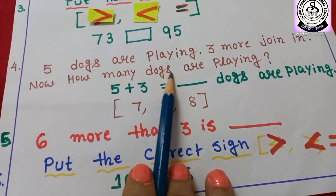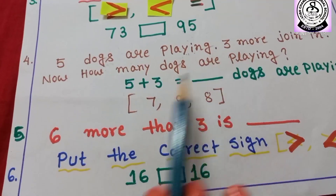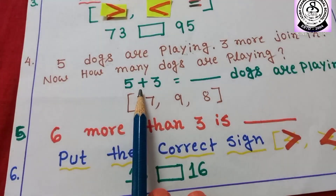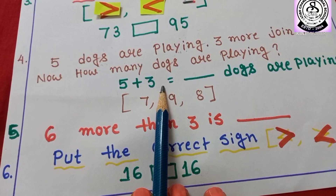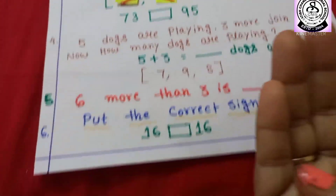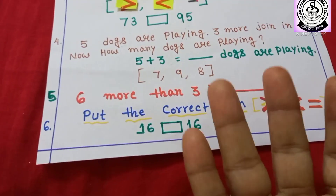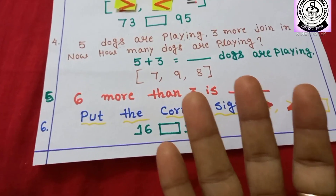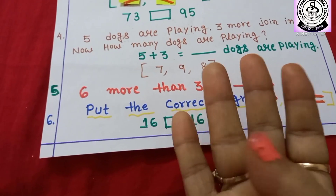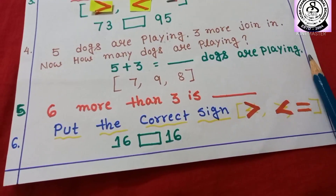Now how many dogs are playing? 5 dogs are playing, so I have written 5. 3 more, so plus 3. 5 plus 3 — count 1, 2, 3, 4, 5. After 5, you have to count 3 more finger marks: 6, 7, 8. So 8 dogs are playing. Three options are given.